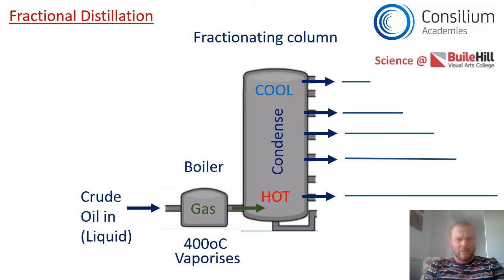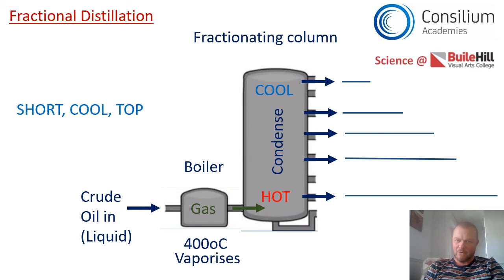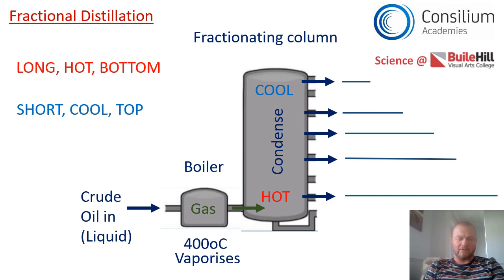Here's a cheat to learn: short, cool, top. Short alkanes condense at the coolest part of the column, which is at the top. If you can get those three phrases into a sentence you'll be picking up marks. And the opposite is true — long-chain alkanes condense at the hottest part of the column, which is at the bottom. So instead of a mixture of crude oil, the fractionating column now gives us LPG at the top on its own, petrol on its own next, and so on.